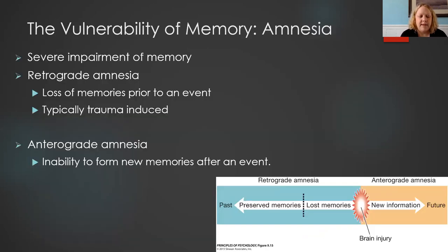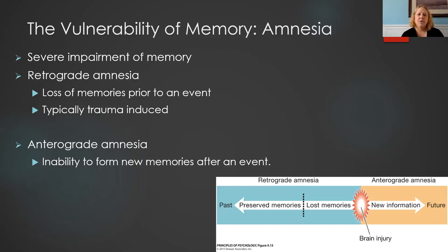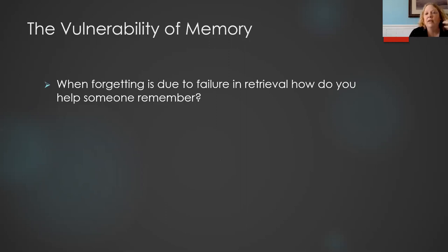Another vulnerability of memory is amnesia, and we have two types. Retrograde amnesia is when the individual loses their memory of everything prior to the event — this type is typically trauma-induced, such as from a car crash or traumatic brain injury. Anterograde amnesia is when, from the moment the person loses their memory, they are unable to form new memories. In retrieval issues, the information is still there, the memory hasn't been lost, but there are issues accessing it.